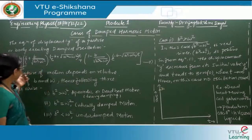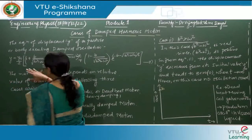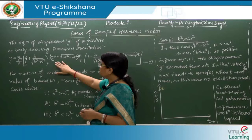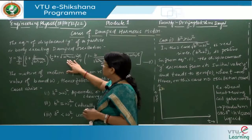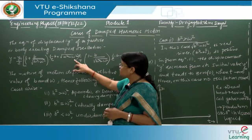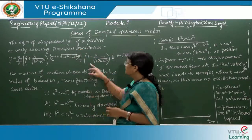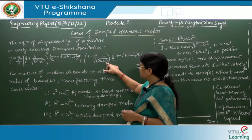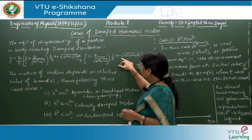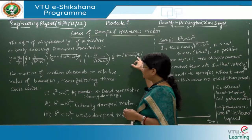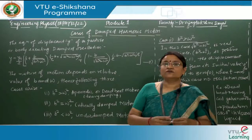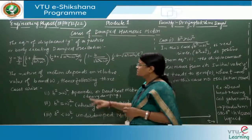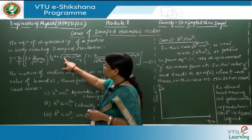We derived the equation: y = (y₀/2) · [(1 + b/√(b²−ω²)) · exp(−(b + √(b²−ω²))t) + (1 − b/√(b²−ω²)) · exp(−(b − √(b²−ω²))t)]. Now we will discuss the cases of damped harmonic motion by considering the relative value of b and ω.